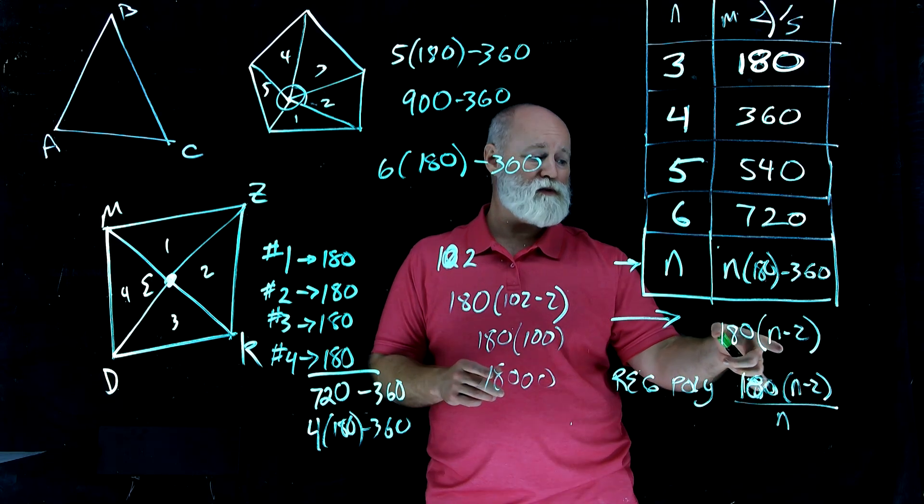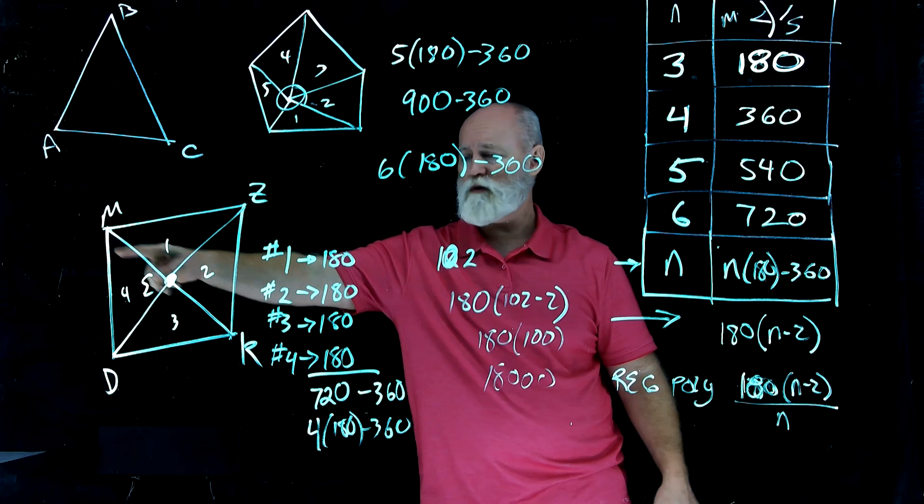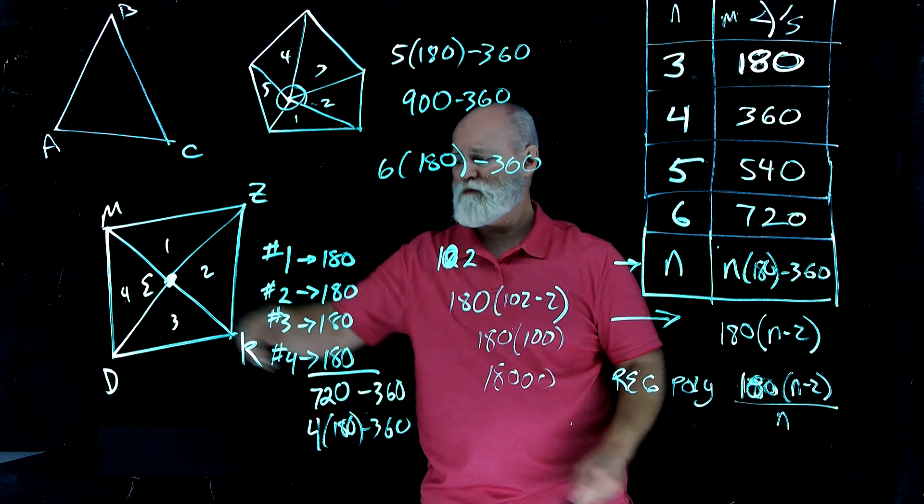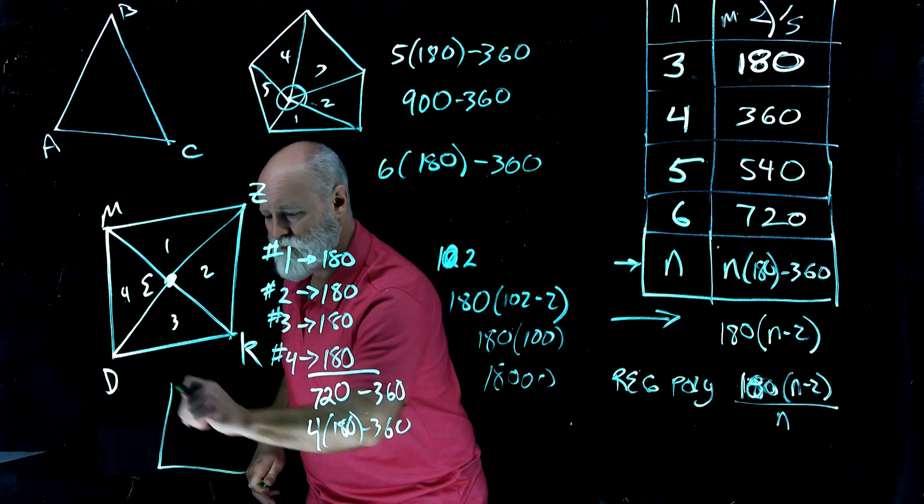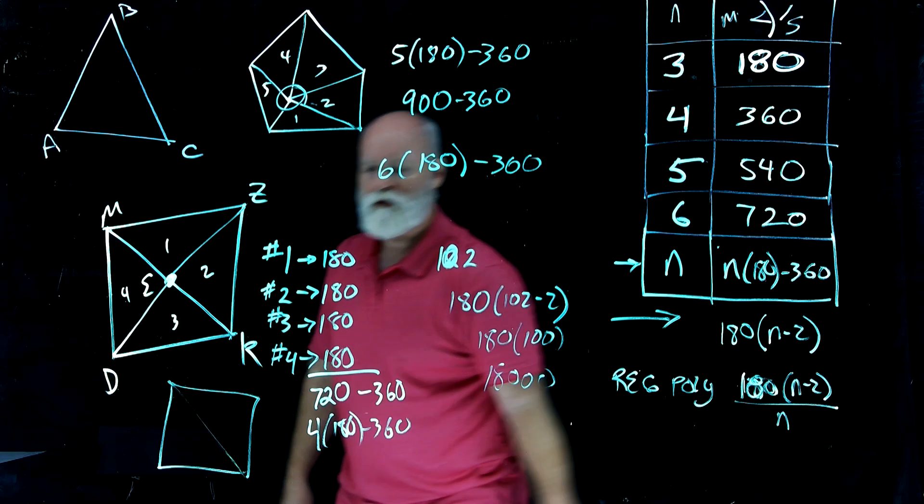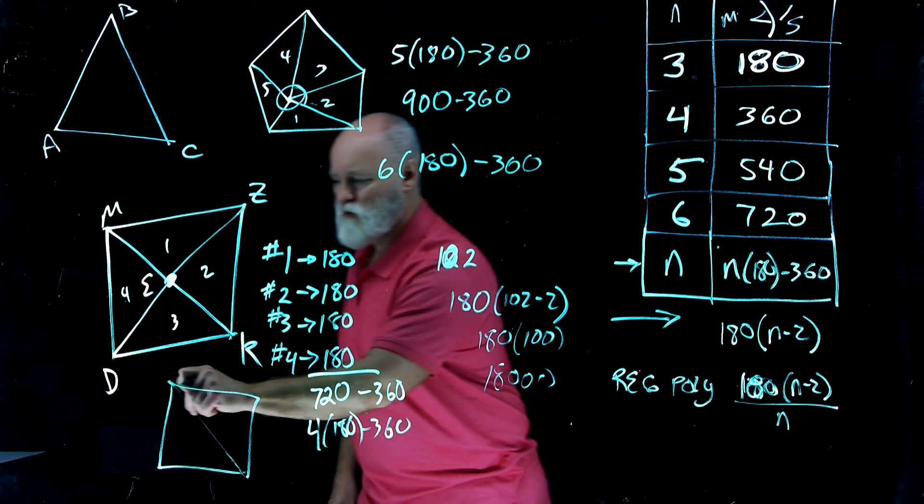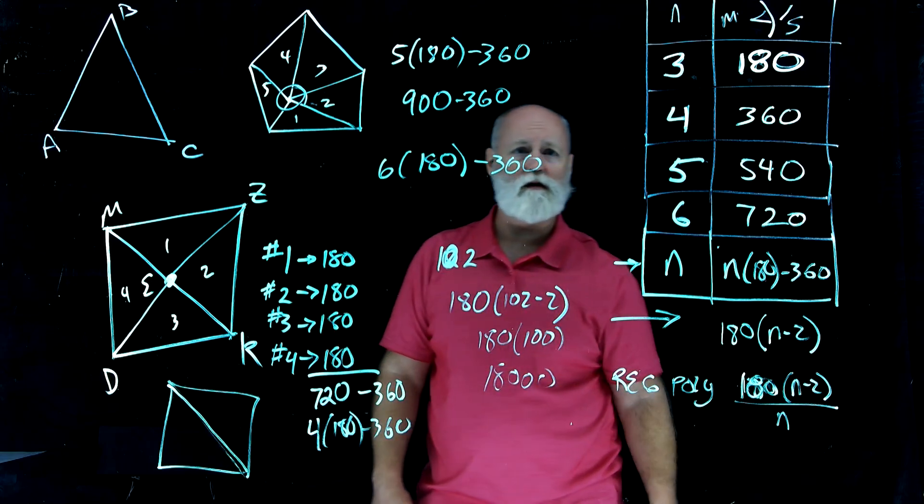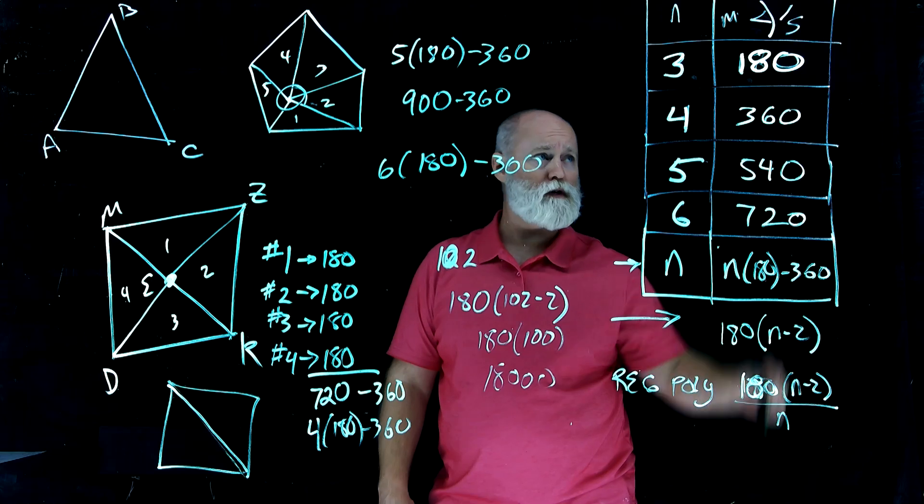And then there's also other ways we can find this. Like I just drew all the points to an arbitrary center piece. But what if we had done this way? What if I just connected from one vertex to the other? Look at that. I have two triangles, don't I? Two times 180.